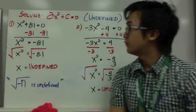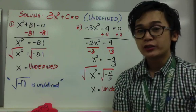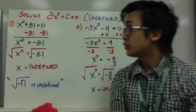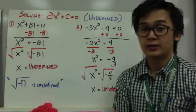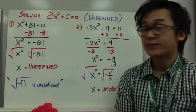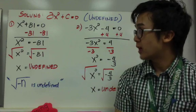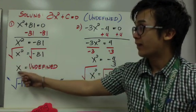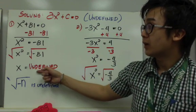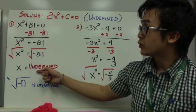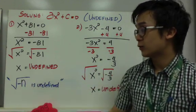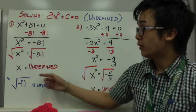Sometimes when we solve a quadratic equation, we encounter undefined answers. For example, we have x squared plus 81 equals 0. We subtract 81 from both sides to get x squared equals negative 81. Taking the square root of both sides, when we take the square root of a negative number — in this case negative 81 — it is undefined. We cannot take the square root of a negative number. So always remember: every time you take the square root of a negative number, the answer is always undefined. Therefore, x is undefined.